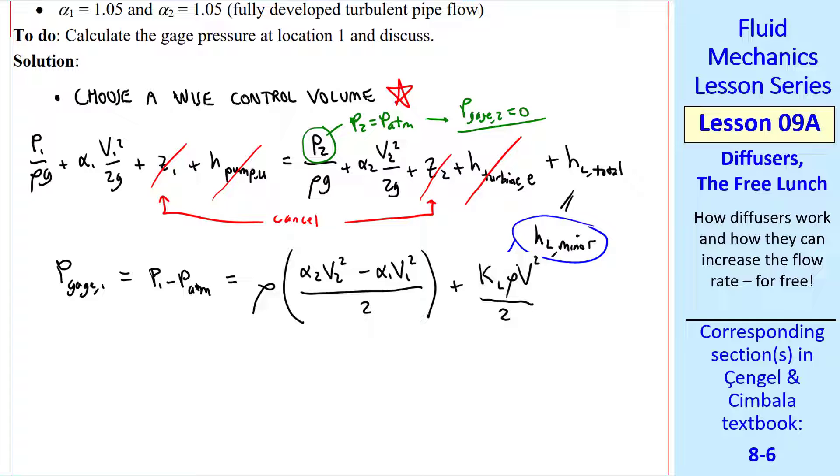But which V do we use? Remember by convention, we use the larger V when you have a change of diameter. So we use V one, not V two.